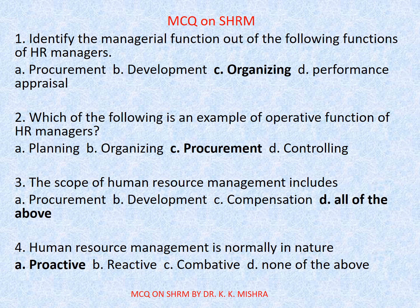Question number 2. Which of the following is an example of operative function of HR managers? Options are A. Planning, B. Organizing, C. Procurement, D. Controlling. Correct option is C. Procurement.